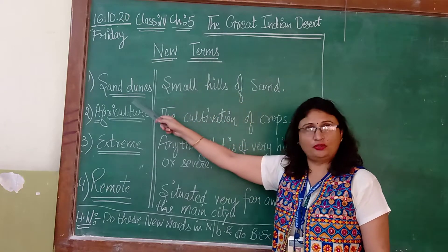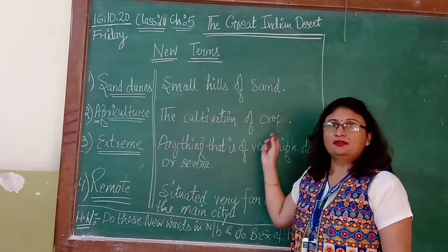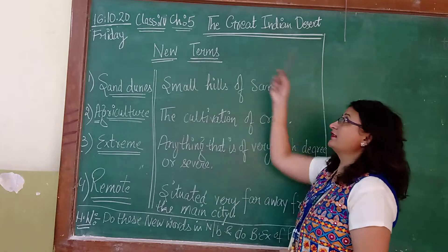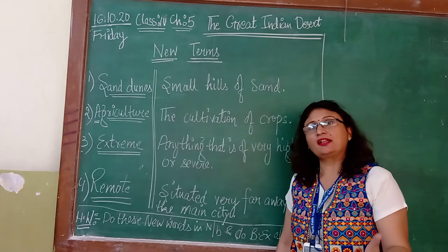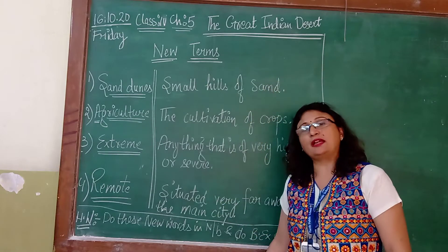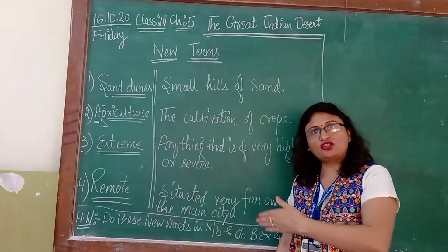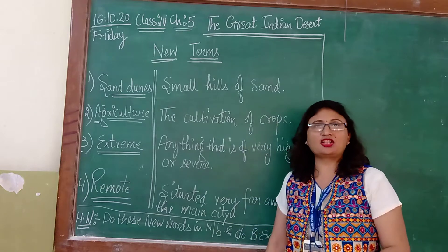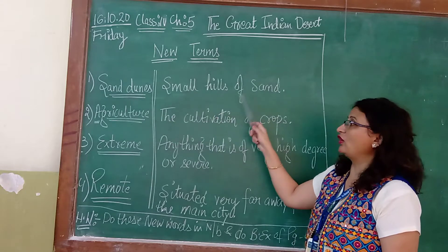The first term is sand dunes. Sand dunes are the small hills of sand. The Great Indian Desert is mainly sand, and the area is mainly sand dunes, which are temporary hills.